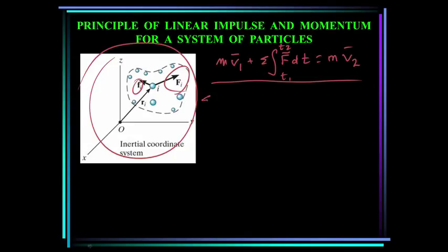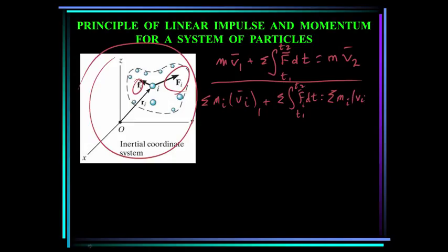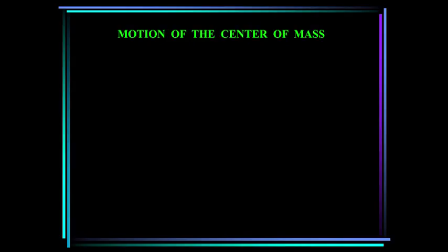We can expand this equation from a single particle to a system of particles. The sum of all individual particles' masses times their velocity at state one, plus the sum of all external forces integrated over time, equals the sum of all individual masses times their velocity at state two. Now let's talk about the center of mass.